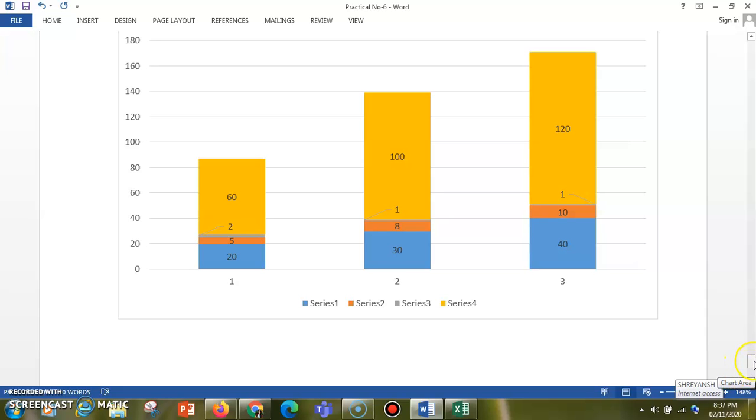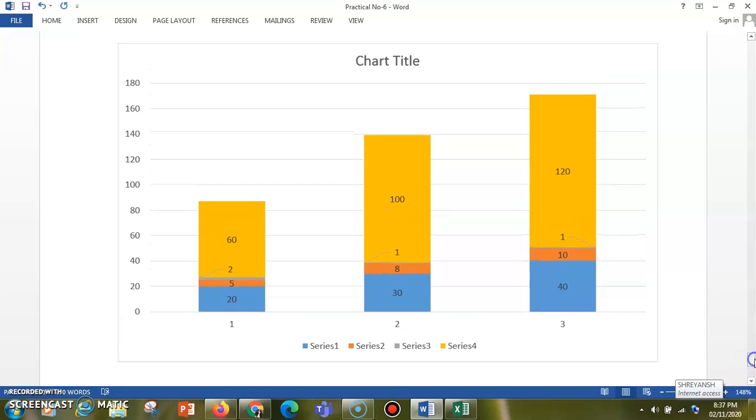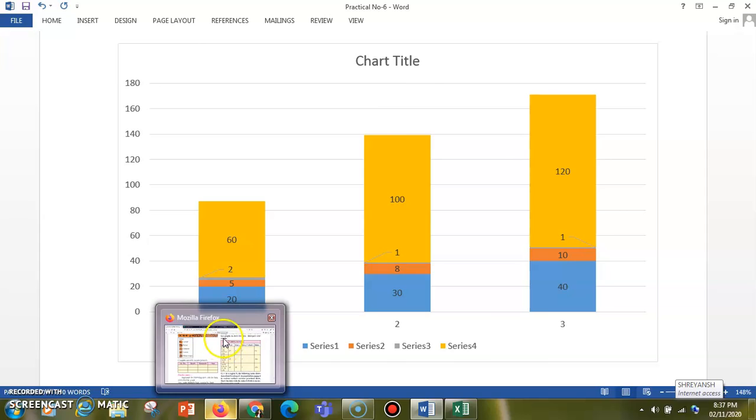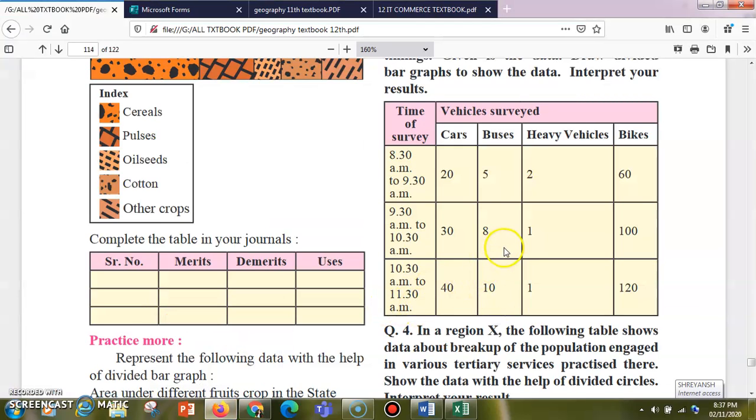This is the answer for your question number three practical slot. I hope you understood how to solve this question. This is quite a different question as compared to the others. You just have to make a block of 8:30 to 9:30, 9:30 to 10:30, and 10:30 to 11:30 on your x-axis.